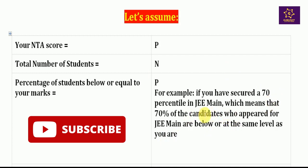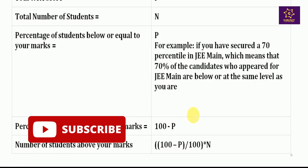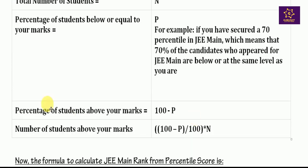If you have 70 percentile, this means that 70 percent of the candidates who appeared in that particular session scored less than or equal to your marks. The percentage of students above your marks is therefore 100 minus P.